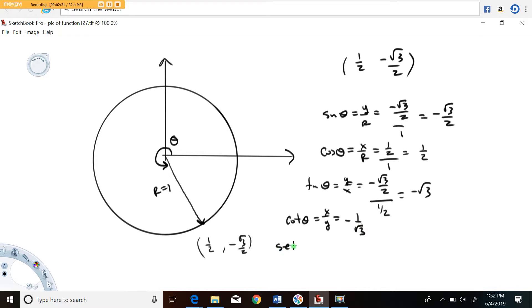The secant function is defined as r over x. It's related to the cosine function. It's actually the reciprocal of the cosine function. So that's going to be one over one half, which is two.